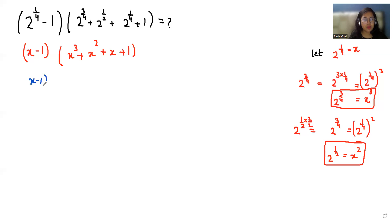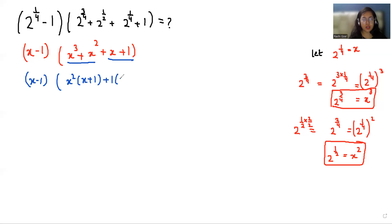Now, looking at (x - 1)(x cubed + x squared + x + 1): from the first two terms of the bracket I can take x squared as common, giving x squared(x + 1), and from the remaining terms take 1 as common, giving 1(x + 1). So we have (x - 1)(x + 1)(x squared + 1).